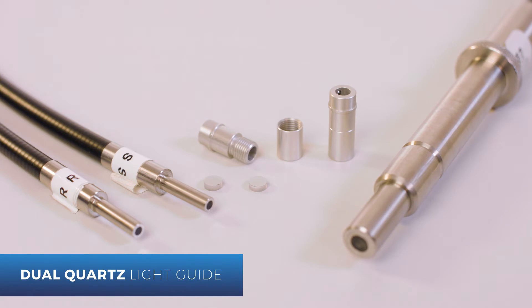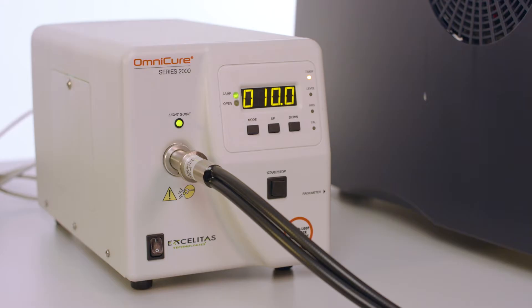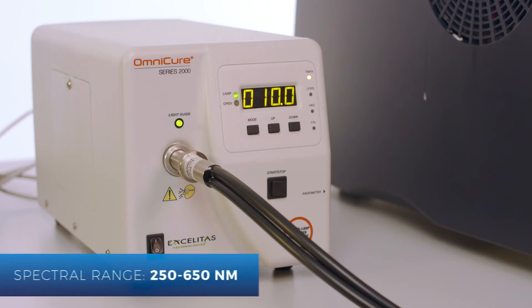The light guide is attached to the instrument using a special adapter. The light source Omnicure, which contains a high-pressure mercury lamp, delivers light over wavelengths ranging from 250 to 650 nanometers.